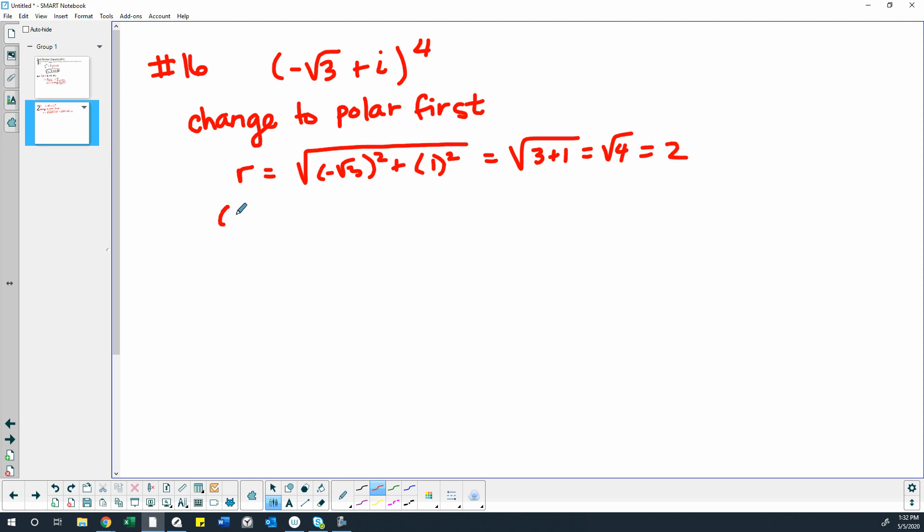Okay, so then we want to find theta. So we're going to do that by doing the inverse tangent of negative square root of 3 over 1. So that gives us a quadrant 4 angle, which is a 60 degree quadrant 4 angle, correct?